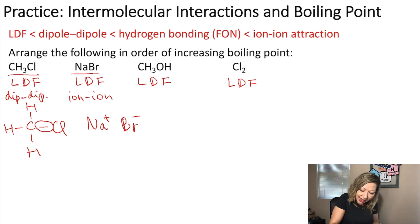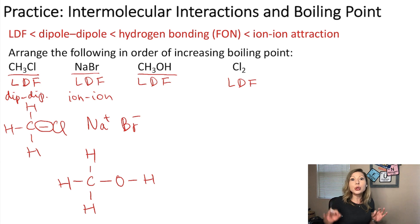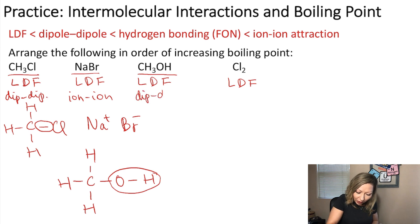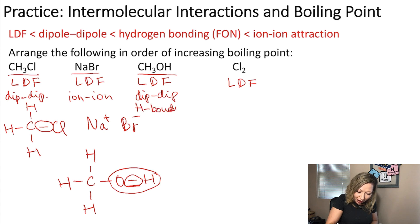The next one is CH₃OH, which is methanol. If I draw out the structure, carbon is the central atom with three hydrogen atoms connected to it, and then an oxygen atom connected to a hydrogen atom. We have polar bonds, so we have dipole-dipole interactions. And we do have hydrogen bonding because of the OH bond, so H-bonding is also present.